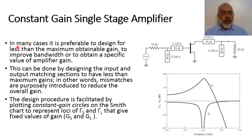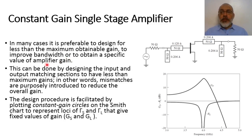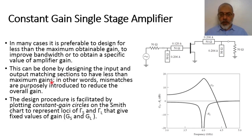In many cases, it is preferable to design for less than the maximum obtainable gain to improve the bandwidth or to obtain a specific value of the amplifier gain. This can be done by redesigning the input and output matching sections to have less than the maximum gains — in other words, to introduce a slight mismatch. So mismatches are purposely introduced to reduce the overall gain.